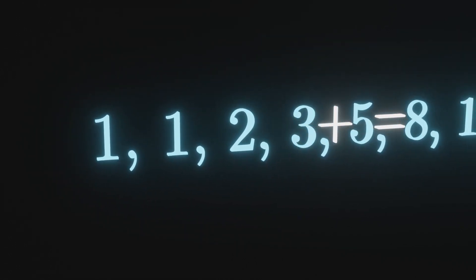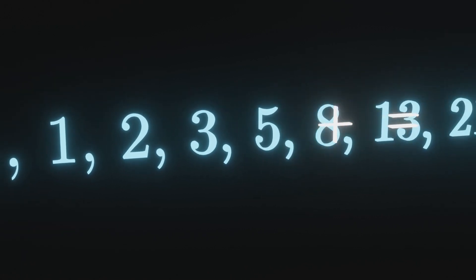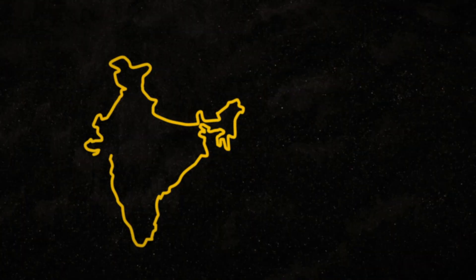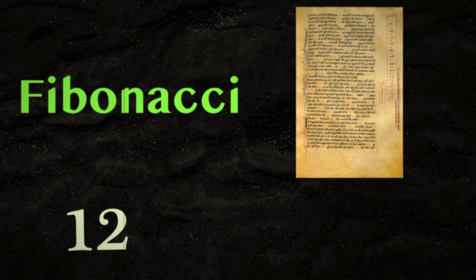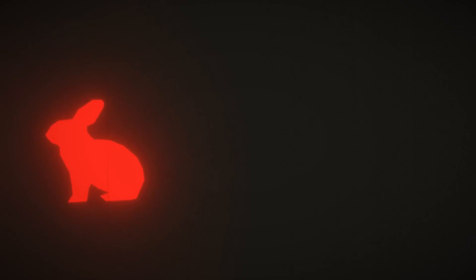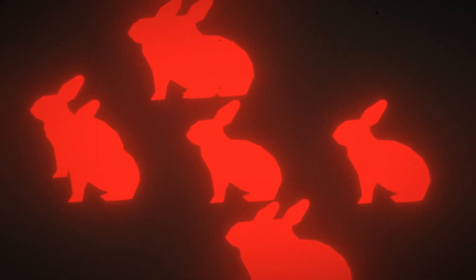This is known as the Fibonacci sequence. Each term in this sequence is the sum of the previous two terms. This sequence was first described in India around 200 BCE, but it gets its name from Fibonacci, who wrote the book about the sequence in 1202. Originally, he was talking about a hypothetical population of rabbits.